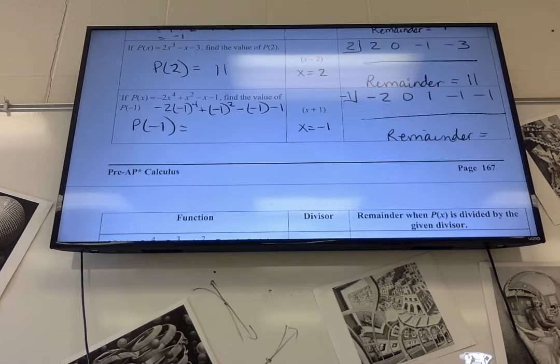Then any time you raise a negative to an even exponent, the negative goes away. So this is really negative 2 times 1 plus 1, plus 1 again, which is minus a negative, and then minus 1.